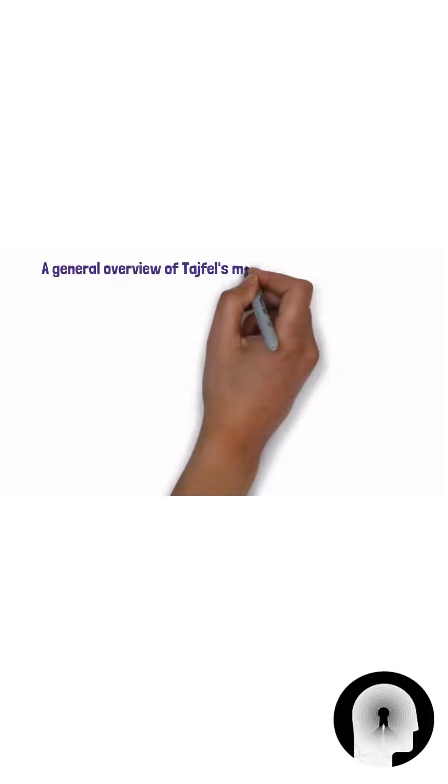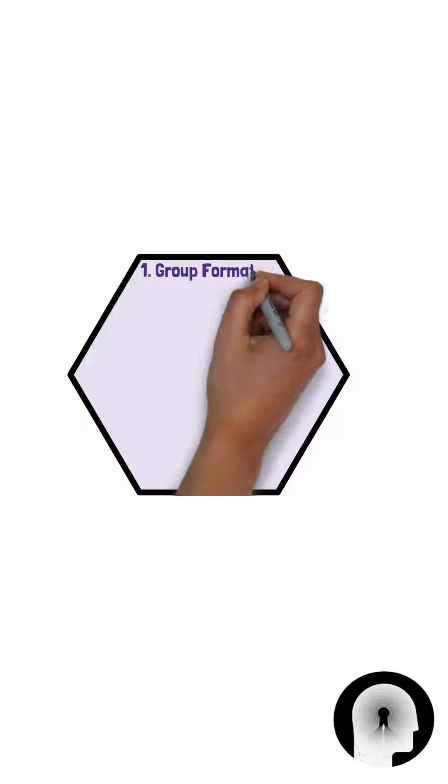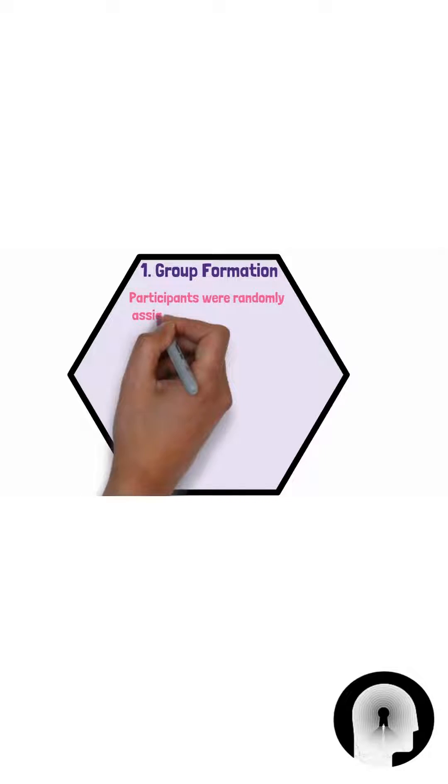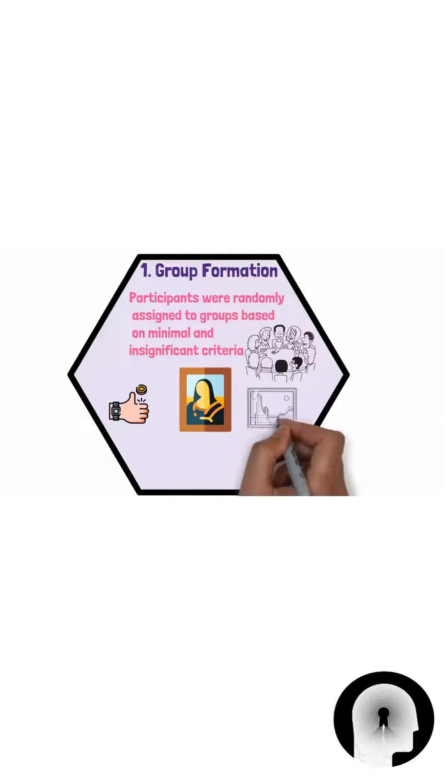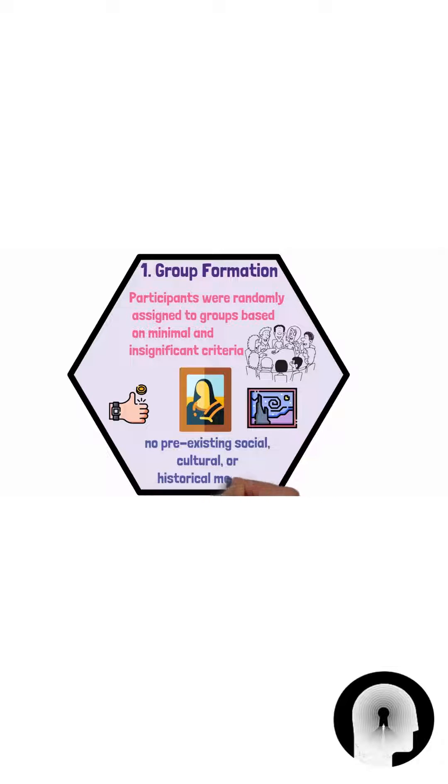We will now provide a general overview of Tajfel's minimal group experiments. Firstly, there's group formation. Participants were randomly assigned to groups based on minimal and insignificant criteria such as the flip of a coin or their preference for certain abstract paintings. These groups had no pre-existing social, cultural or historical meaning.